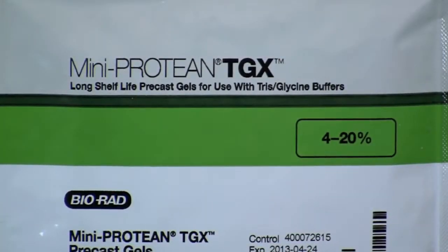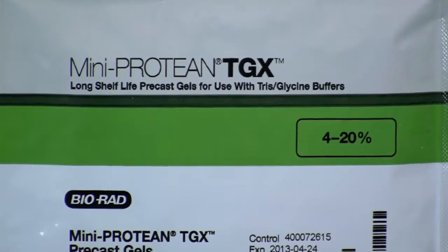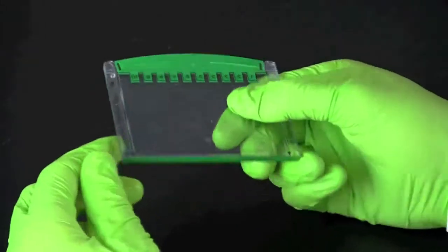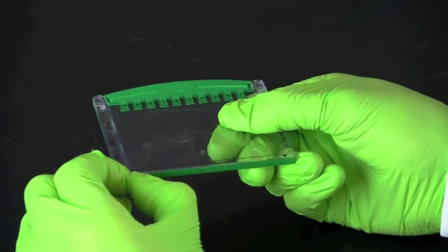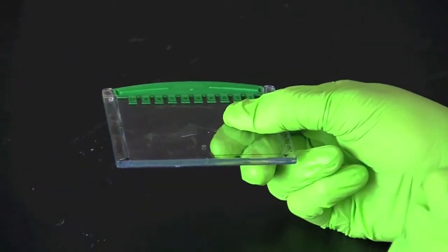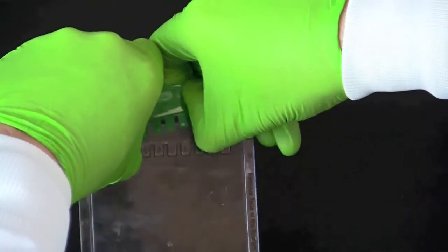Prepare the mini-protein TGX gel by removing it from its package, pulling the tape off of the bottom of the gel, and removing the comb.